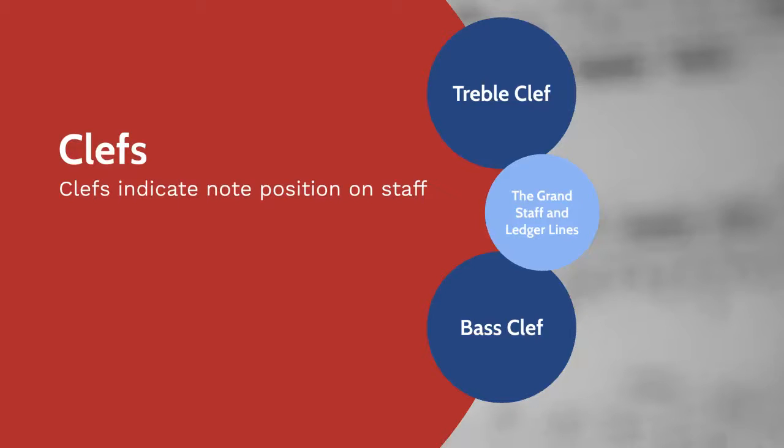Before we look at the individual clefs, can you remember the three points about note names? We have seven notes, labeled A, B, C, D, E, F, and G. The sequence repeats. And we read the notes from the bottom of the staff to the top.